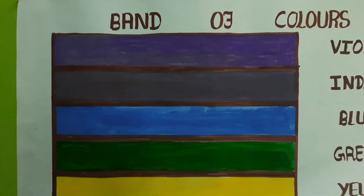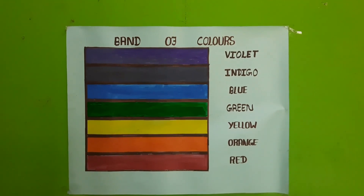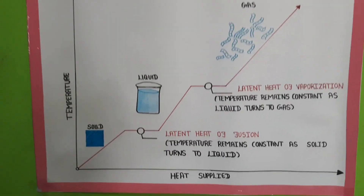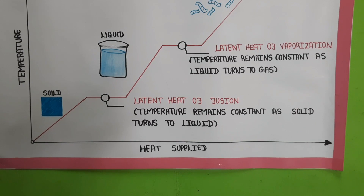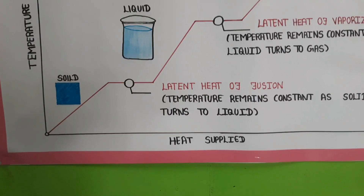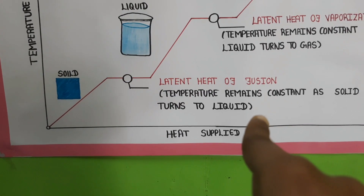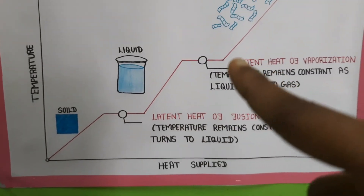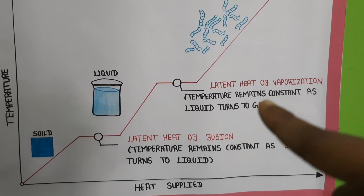We will do two charts. The first chart is shown and the second chart follows. Look at the graph — heat is applied on the x-axis and temperature is shown on the y-axis. The first chart is solid state. This is latent heat of fusion, where temperature remains constant as solid turns into liquid. Liquid then increases in temperature.